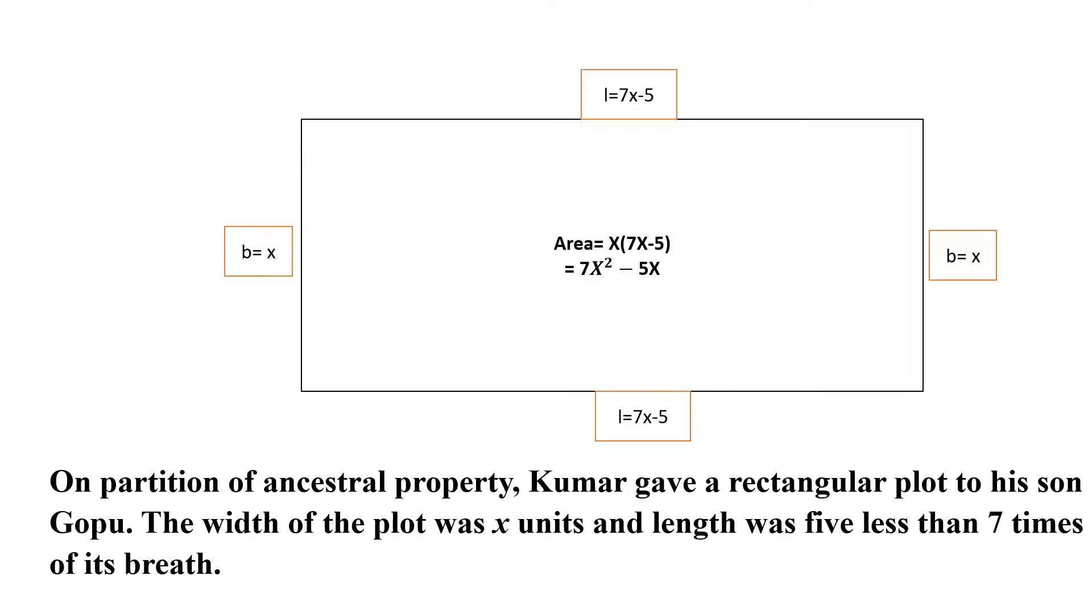The width of the plot was x units and the length was five less than seven times of its breadth. So let the breadth be x, then the length will be seven times the breadth less than five, which is 7x minus 5.